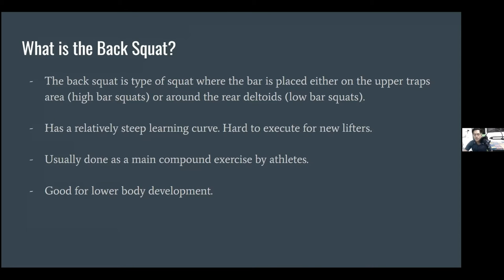So first, what is the back squat? The back squat is a type of squat — the squat is an umbrella term for all existing variations. The back squat is where the bar is placed either on the upper traps area, the high bar squat, or around the rear deltoids area, which is the low bar squat. It is the kind of squat usually seen in the gym where people place a bar with weights and do a squat.